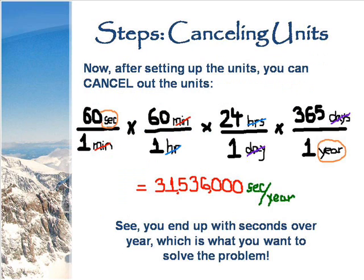The next step is cancelling units. As mentioned before, you will end up with seconds over years. What you have to do to get the final answer is multiply all of the numbers on top, which will end up with 31,536,000 seconds per year. You end up with seconds over year, which is what you want to solve the problem.